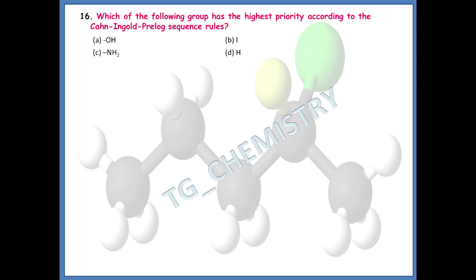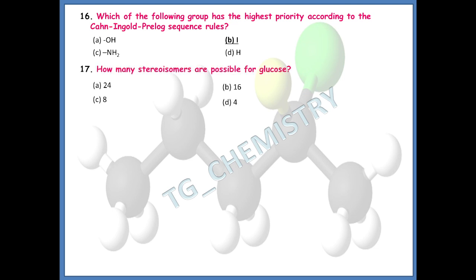Another question from the CIP sequence rule: which group has the highest priority? Among the four options, iodine sits at the very top of the CIP sequence rule, and hydrogen is at the bottom. The right answer is option B — iodine.